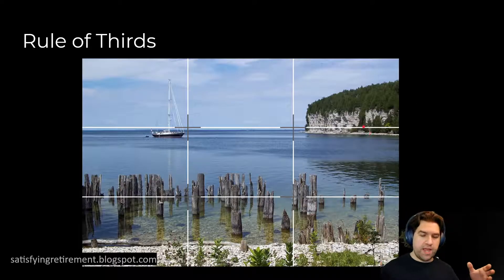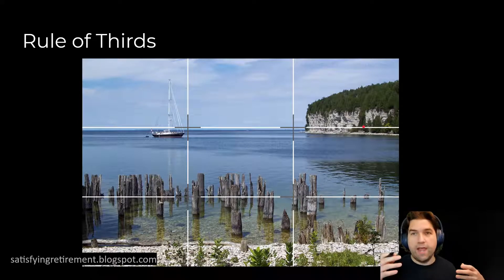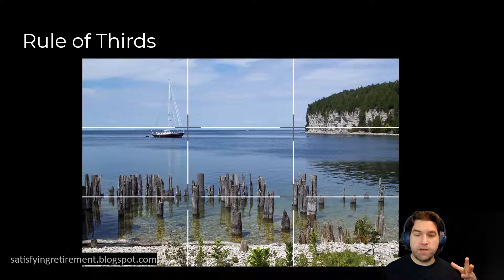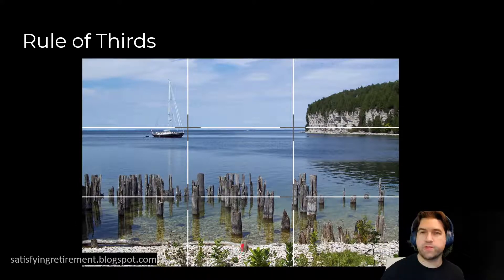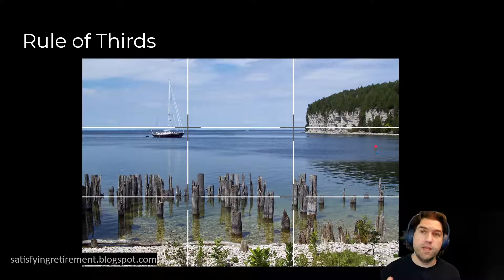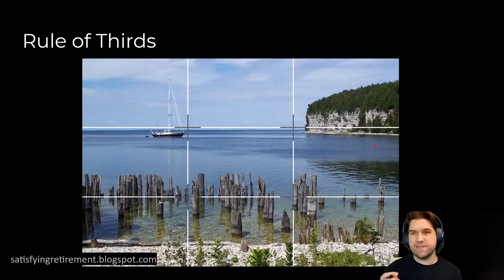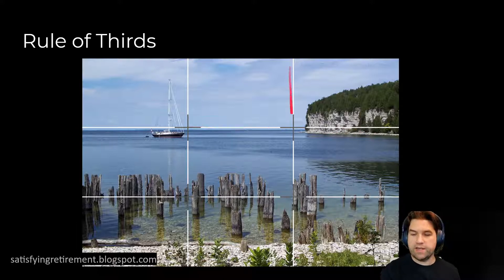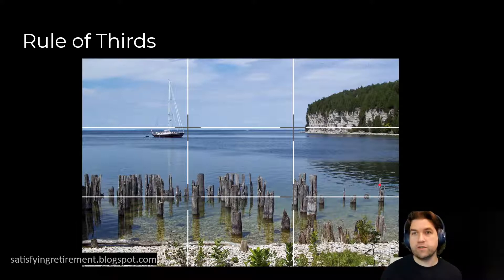The first and maybe most common rule you've probably already heard of is the rule of thirds. Any basic filmmaking or photography class is probably going to cover this first. When people are starting out, they often want to put things straight in the center of the frame, because we think center is most important — but straight center doesn't give us a lot of information. Breaking it into thirds is much more appealing and visually interesting.